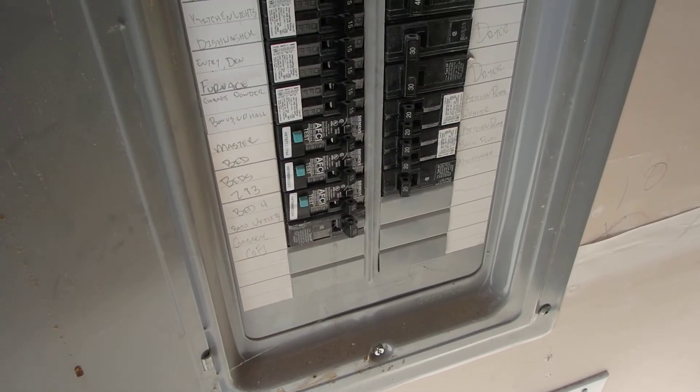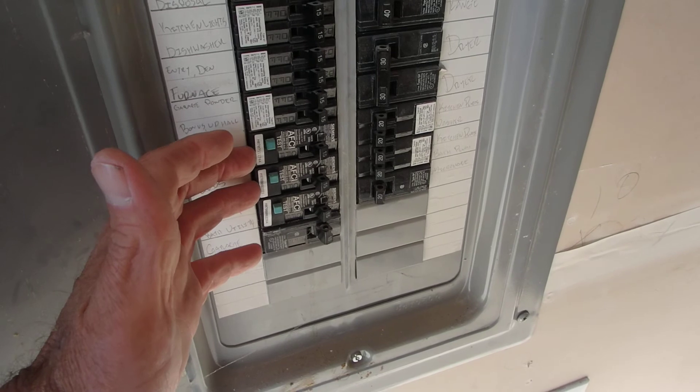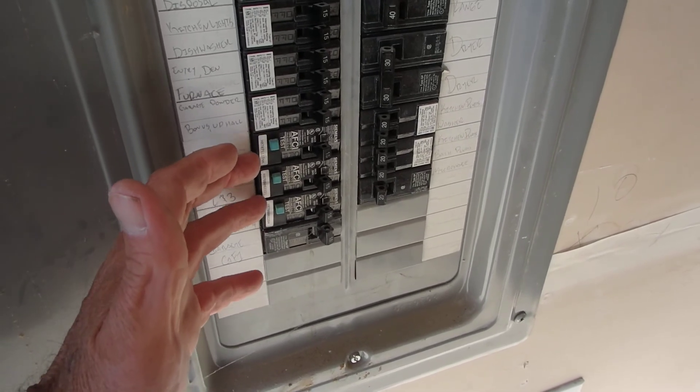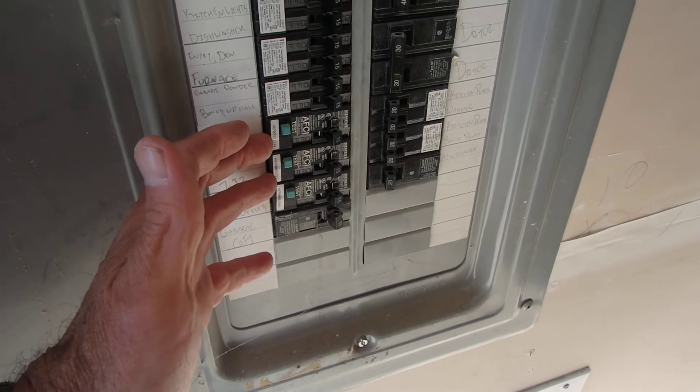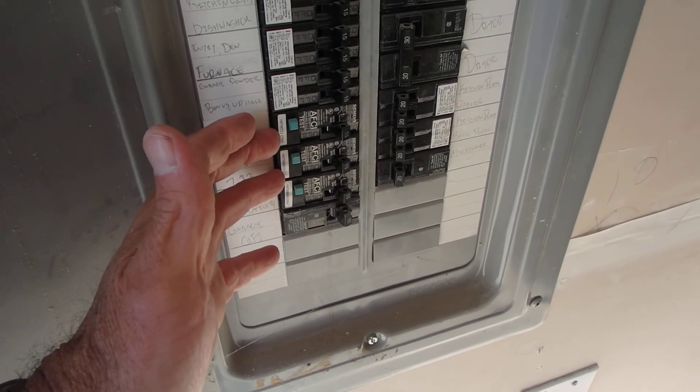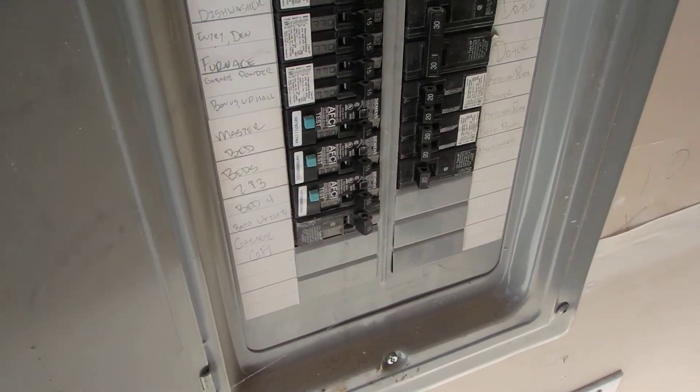But if you have a client, or you yourself have issues with nuisance tripping in a newer home, and obviously after the 2002 period when we started installing these, then you might want to think about changing out that arc fault to one of the newer ones. They perform quite well, and it's pretty rare to hear about a person having an issue with them.